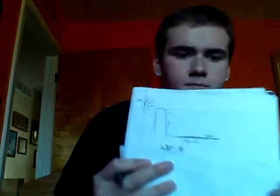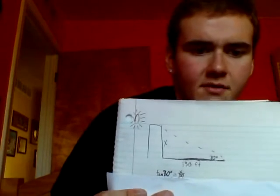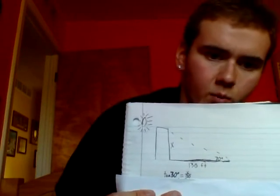Then you're going to write out your equation to look a little something like this: tangent of 70 equals x over 130. Once you've done that, you're going to multiply both sides by 130 in order to get x by itself on one side, so you are able to solve for the building's height.